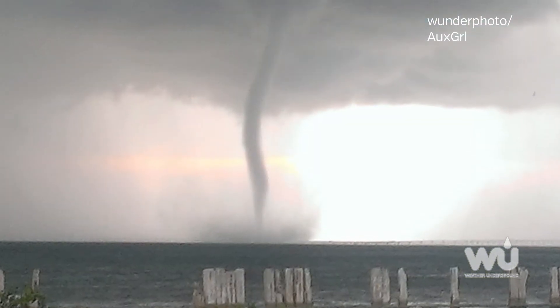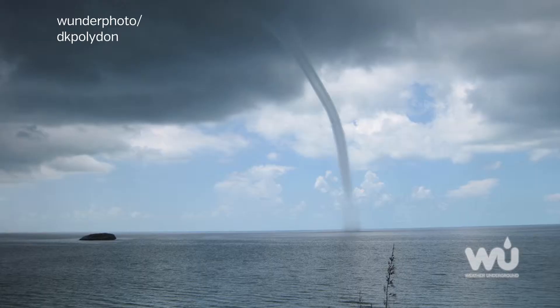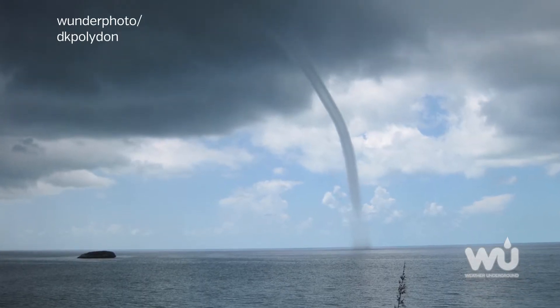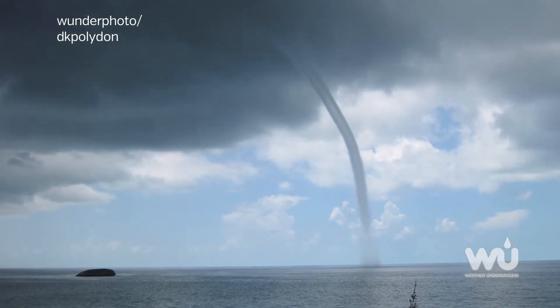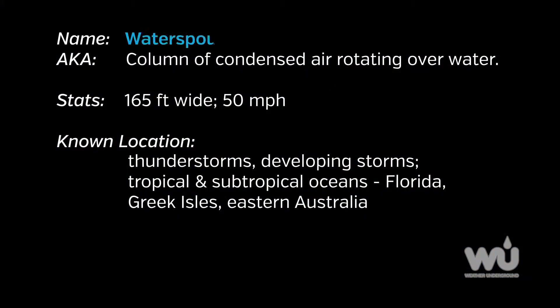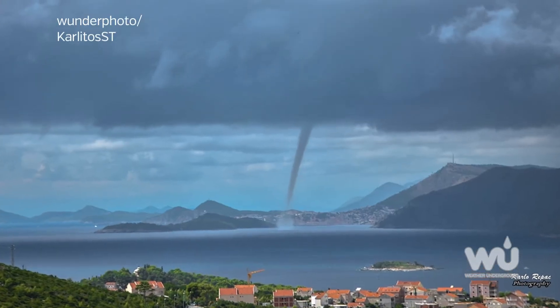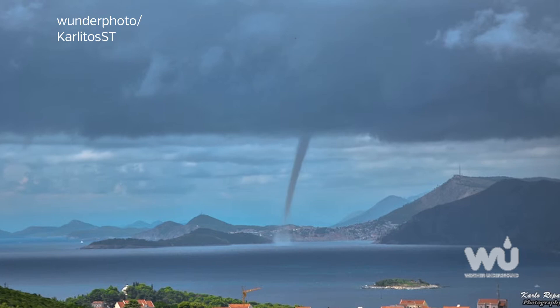Water spouts are columns of condensed air rotating over water, most often over the oceans in the tropics or subtropics. Contrary to their name, they don't spout up from the water — rather they develop from above during severe thunderstorms, with air rising and rotating on a vertical axis. These tornadic water spouts are the most dangerous type, but fair-weather water spouts are more common and rarely dangerous.